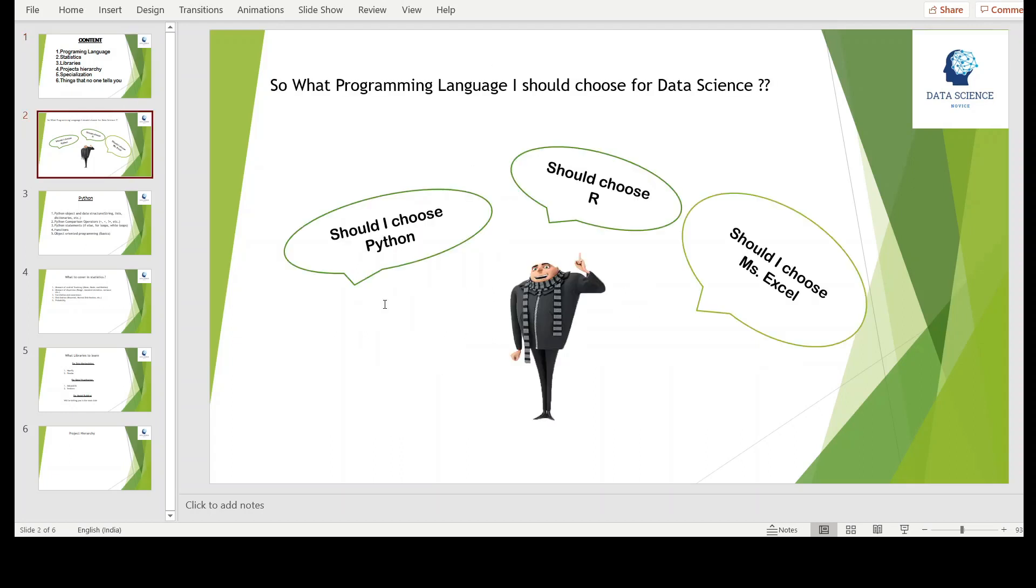Oftentimes there is a war between people about whether R or Python is better. To be honest, both languages are good and you should focus on both. Start with Python first, and once you get comfortable with Python, go with R because companies do ask for R sometimes. Once you are done with Python and R, it's time to learn Excel because Excel can do wonders. In this video, we are going to focus on Python because once you learn Python, you don't need any guidance on R—you can learn it on your own.